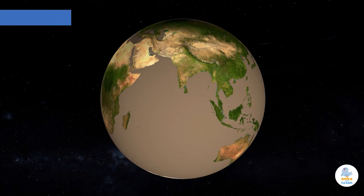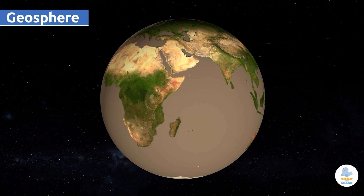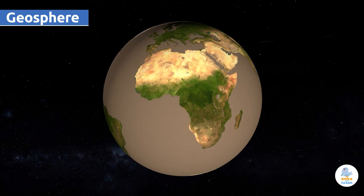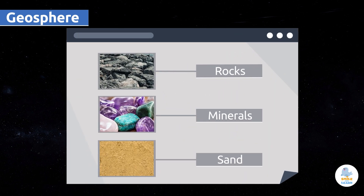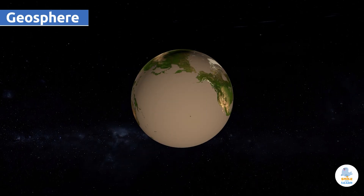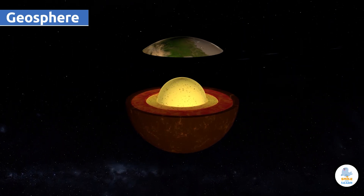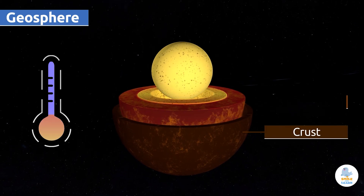The inner layer of the Earth is the geosphere, which extends from the surface to the center of the Earth. This solid ground habitable layer is made up of rocks, minerals, sand, and other materials. The geosphere is divided into three different layers: the crust, the mantle, and the core.